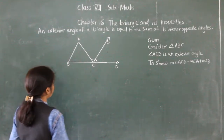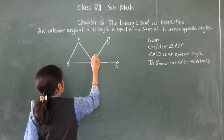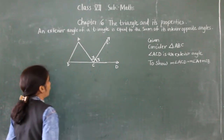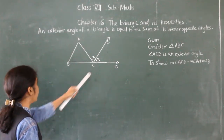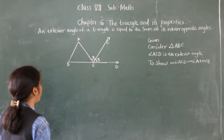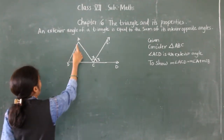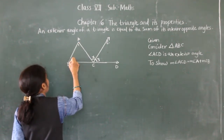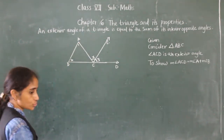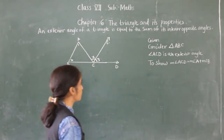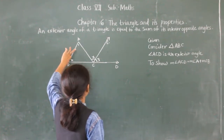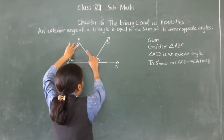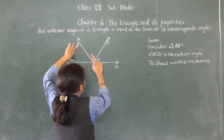Now I will consider angle X and angle Y, and label these as angle 1 and angle 2. So now what we have to show is that this angle ACB is equal to angle 1 plus angle 2.